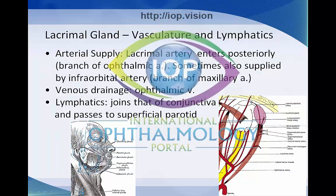The lacrimal gland is supplied by the lacrimal artery. It enters posteriorly and is a branch of the ophthalmic artery. Sometimes there's also some arterial supply from the infraorbital artery, from the maxillary. Venous drainage is via the ophthalmic vein. And the lymphatic drainage joins that of the conjunctiva and passes to the superficial parotid, as with the superior lateral two-thirds of the eyelid.